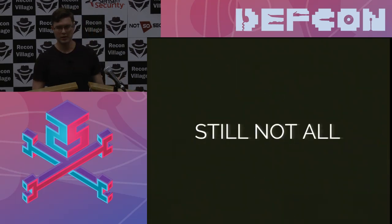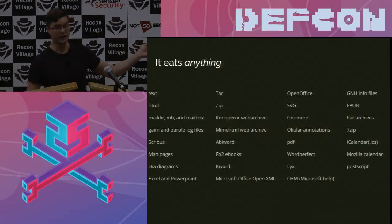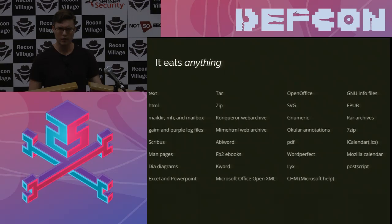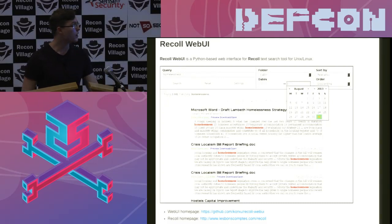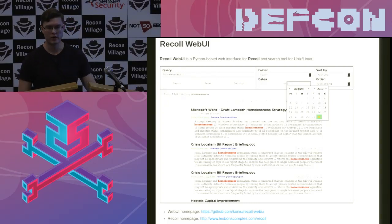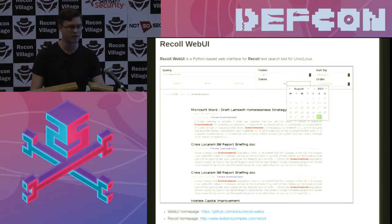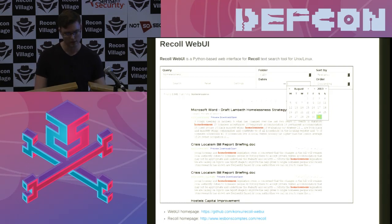The cool thing is this is still not all that Recall can do. It'll eat anything — it has a ton of little features under the hood that seem not particularly interesting until one day you need to open up KWord files, and then you'll be very happy. You can throw just about anything into that index and it'll be able to full text search it. There's also a web UI, which if you're sharing documents among multiple people, lets you do that search over the network and have multiple people collaborate over the same system.